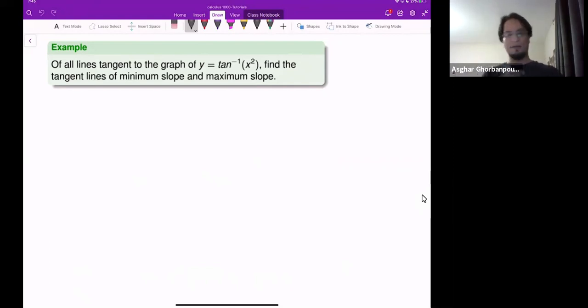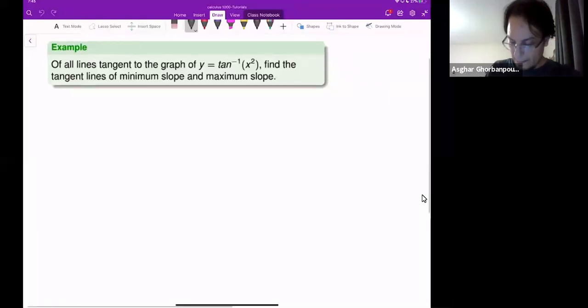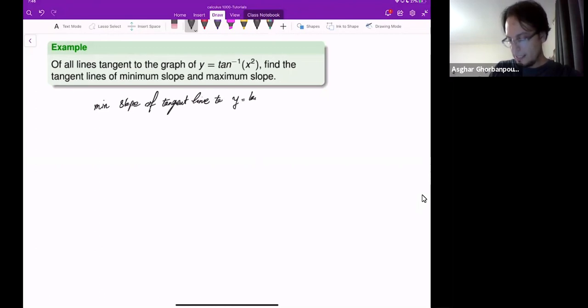Okay, so what we have here is the maximum or minimum - let me just write here - minimum slope of tangent line to y equal to tan inverse of x squared.